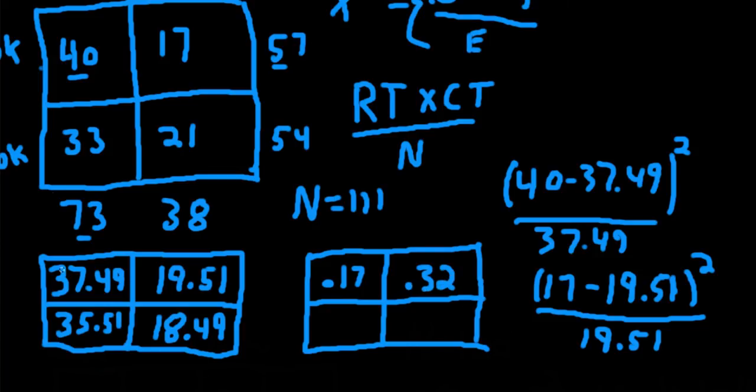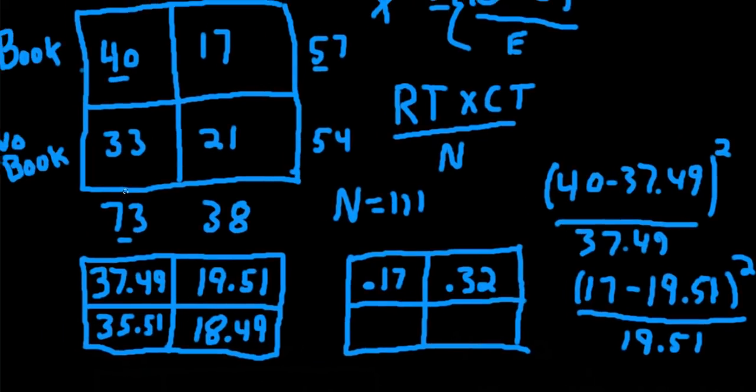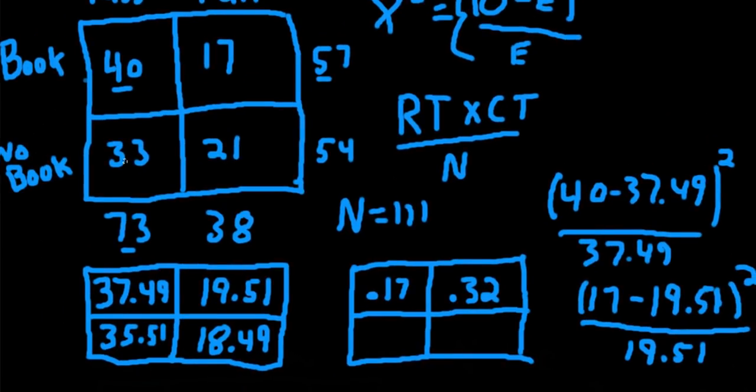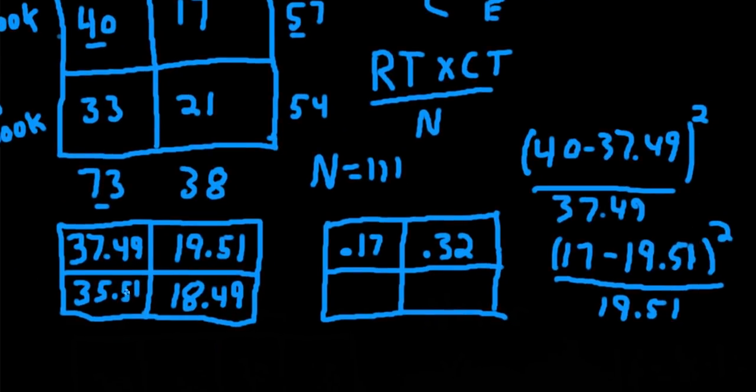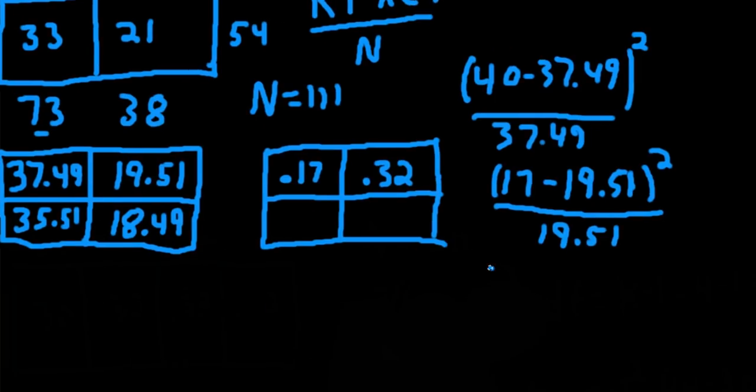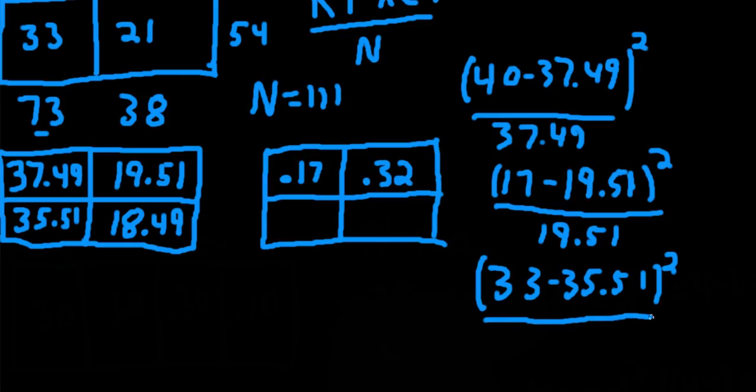Now we'll do this cell, no book pass, 33 minus 35.51, squared, 33 minus 35.51, squared, over 35.51, and we get 0.18.